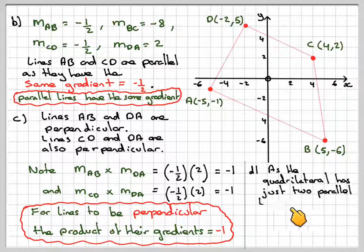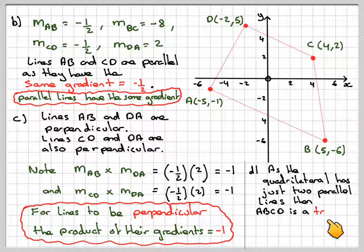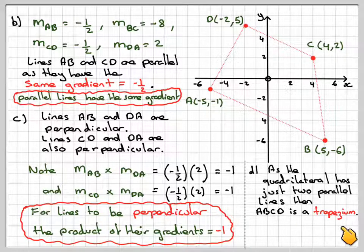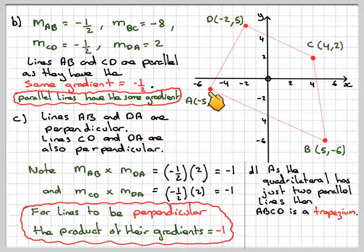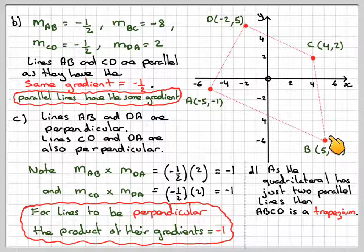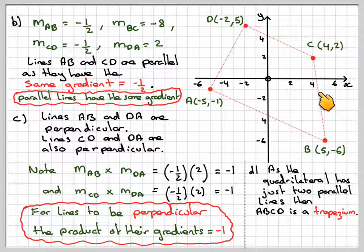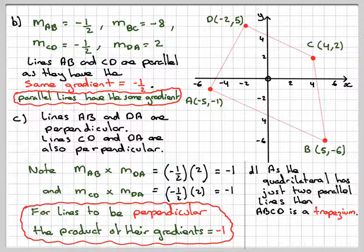And as the quadrilateral has just two parallel lines, then ABCD is a trapezium. It cannot be any other one because only one is perpendicular. The other line is not perpendicular. It cannot be a parallelogram, otherwise these two lines would be the same as well. So therefore, the only thing it can be is a trapezium.